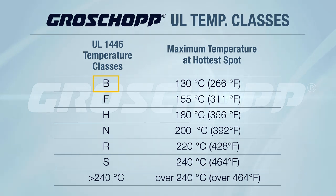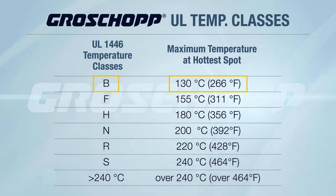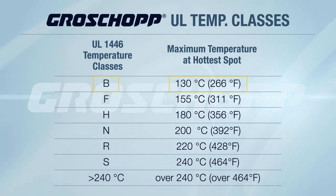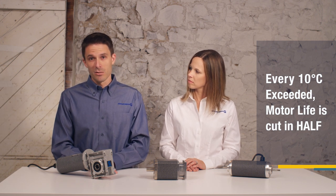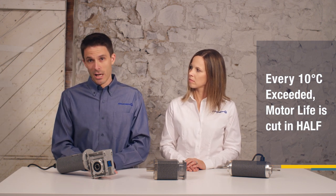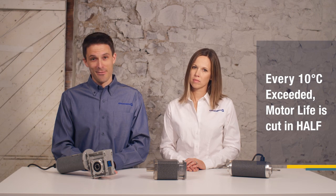For example, temperature class B means that the maximum temperature is 130 degrees Celsius, and that if this temperature is exceeded, the life of the motor will be shortened. This chart helps you determine what level of protection you need for your motor to run in extreme temperatures. Here's a rule of thumb: for every 10 degrees Celsius that your application exceeds the maximum temperature rating, the motor life is cut in half.